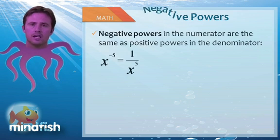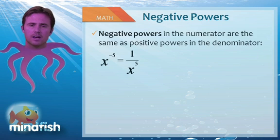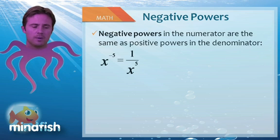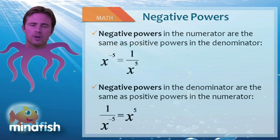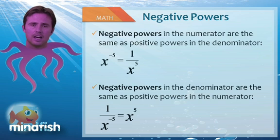Negative powers are the same as just writing one over x to that power. So if you have x to the negative fifth, it's equal to one over x to the fifth. Negative powers in the denominator can be written as positive powers on the numerator. So one over x to the negative fifth is the same as x to the fifth.